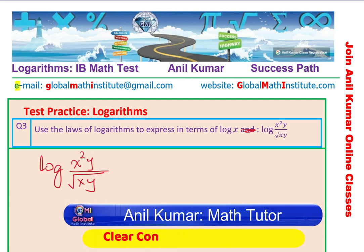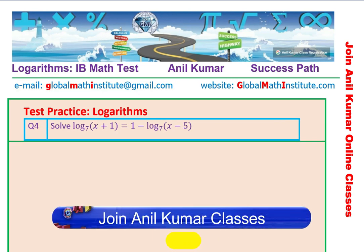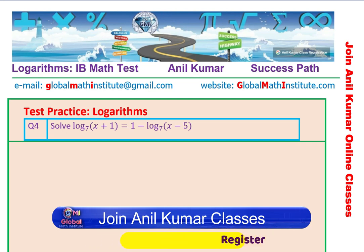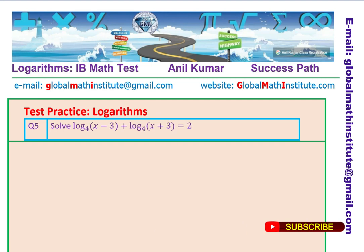In case you want to learn from me, feel free to send an email on the address given. We are now taking new students. Here is question number 4: solve the logarithmic equation log to the base 7 of (x + 1) equals 2(1 minus log to the base 7 of (x − 5)). Some of these equations might have extraneous roots, so be careful. Do check the domain. Here is question number 5: log to the base 4 of (x − 3) plus log to the base 4 of (x + 3) equals 2.